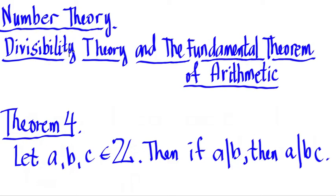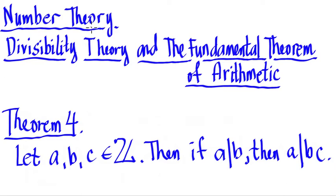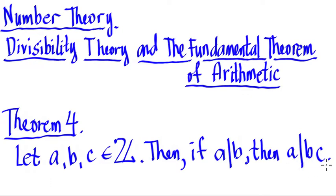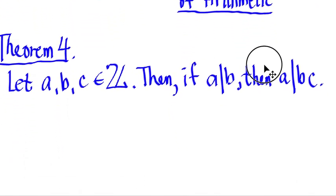We're now on our last video on the theorems of number theory, still in divisibility theory. The fundamental theorem of arithmetic — this is theorem number four, and we'll use this as a marker for future theorems. We state it formally: let a, b, and c be integers. Then if a divides b, then a divides b times c.